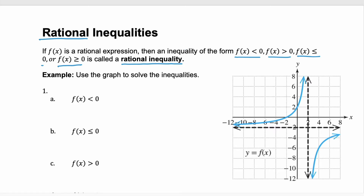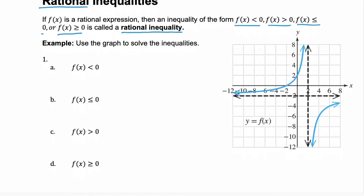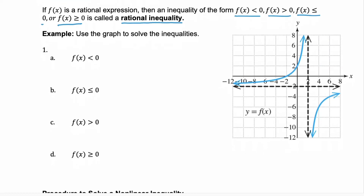We're going to look at the graph of a rational expression and use it to solve the inequalities. Remember that the x-axis is when y equals 0. Anything above the x-axis is when y is greater than 0 — we have positive values for y — and everything below is when y is less than 0.